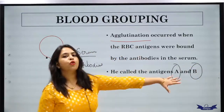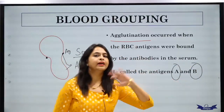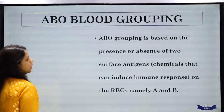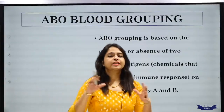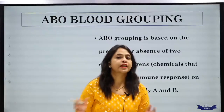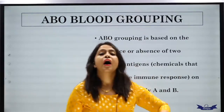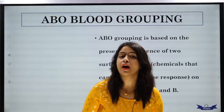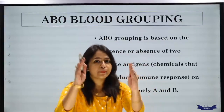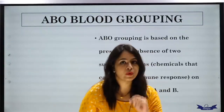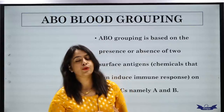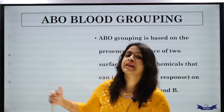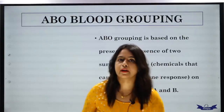According to him, there were two antigens: A and B. There are many ways to classify blood groups — ABO, RH, MN, Duffy — but commonly, and what you need to know, are just two blood groups: ABO and RH. So first, let's study ABO blood groups.